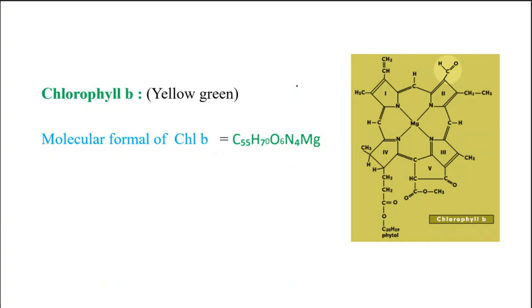Now let us see about chlorophyll B. The major color of chlorophyll B is yellow-green and the molecular formula is C55, H70, O6, N4, Mg. In the center you have magnesium attached to four nitrogen atoms, which are further attached to four pyrrole rings — numbered 1, 2, 3, and 4. The third pyrrole ring is attached with the cyclopentane ring, and the second pyrrole ring has an aldehyde group attached. Each pyrrole ring is also attached to its neighboring pyrrole ring by a carbon and hydrogen.